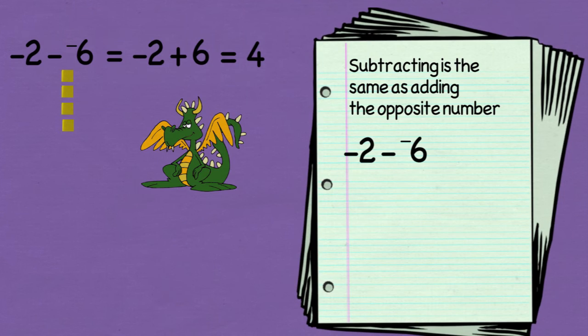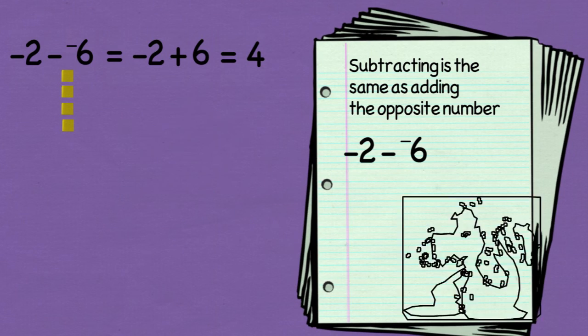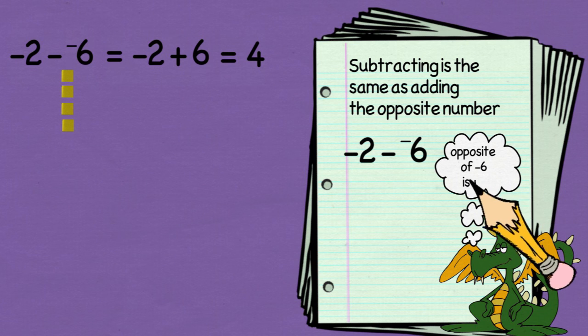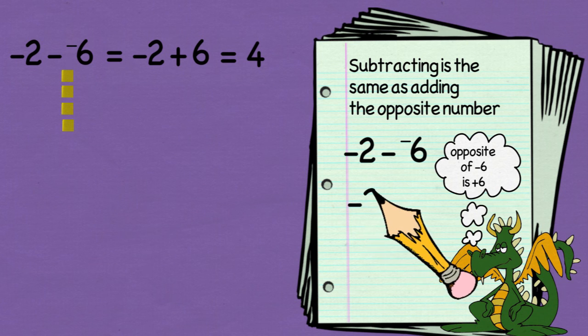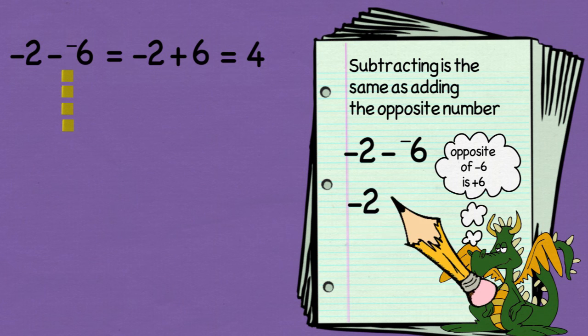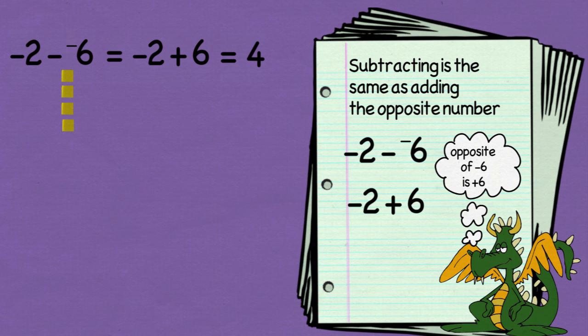I could have just added the opposite of negative 6, which is positive 6, and that would have given me negative 2 plus 6, which equals 4.